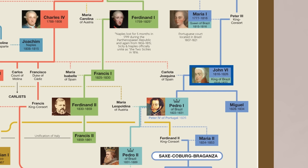Brazil had recently been elevated to the status of a kingdom, and John's son Pedro — whose full name was Dom Pedro de Alcantara Francisco Antonio João Carlos Xavier de Paule Miguel Rafael Joaquim José Gonzaga Pascual Cipriano Serefim de Braganza e Bourbon — was slated to become the next king of the United Kingdom of Portugal and Brazil.